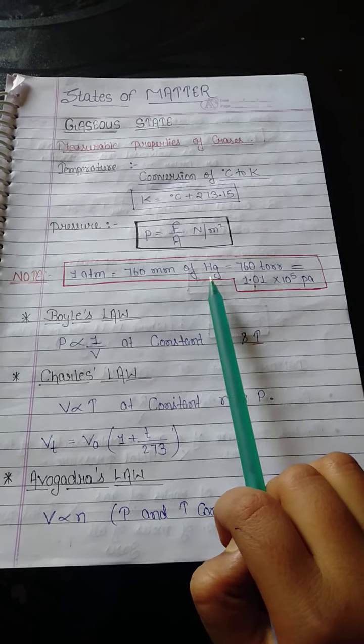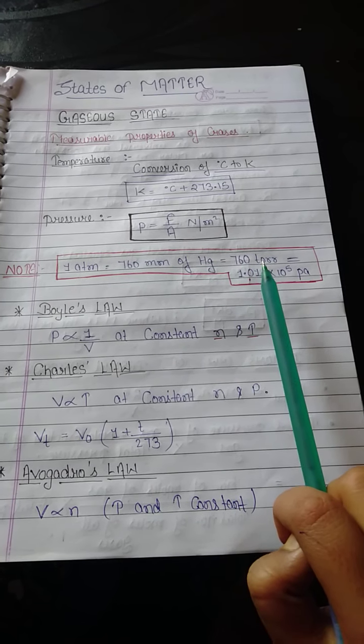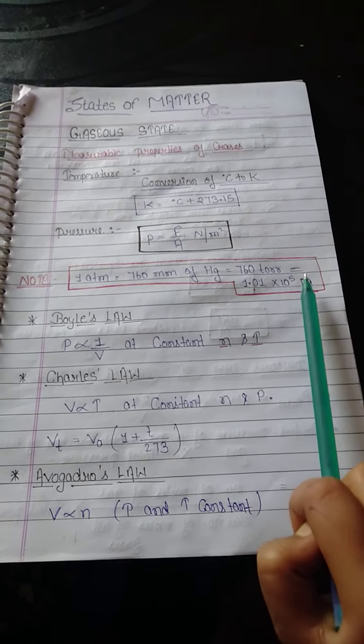One atm is equal to 760 mm of Hg, 760 torr is equal to 1.01 into 10 to the power 5 pascal.